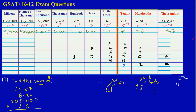Since I got 21 in the units column, I leave the 1 in the units column and carry the 2 into the tens column. That completes the addition in my units column, so I'm moving over to the tens column.